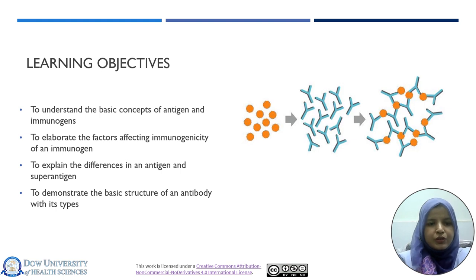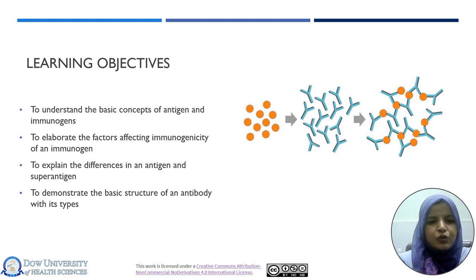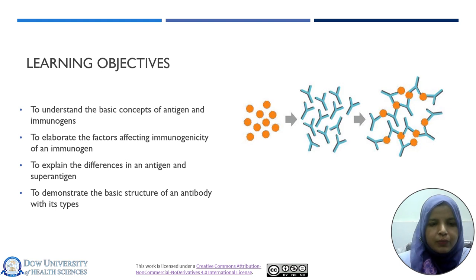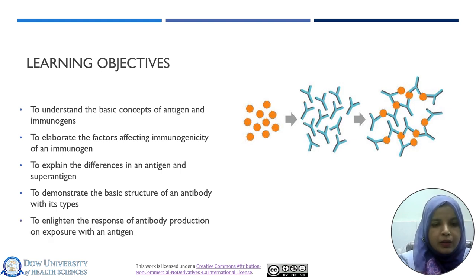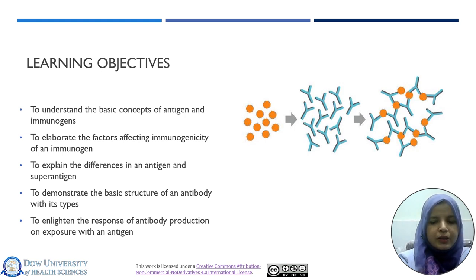At the end of the lecture, students will be able to understand the basic concepts of Antigens and Immunogens. They will also elaborate the factors affecting Immunogenicity of an Immunogen. They will explain the differences between an Antigen and Super Antigen, demonstrate the basic structure of an Antibody with its types, and enlighten the response of Antibody production on exposure with an Antigen.